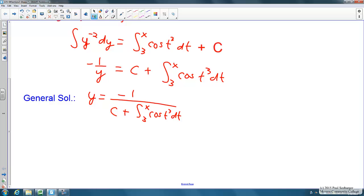What we need to do though is actually figure out what that c is based on our initial condition. We know that y of 3 is equal to 2, so we can plug the 2 in for y and we know that's equal to negative 1 over c plus the integral from 3 to 3 cosine of t cubed dt. The integral from 3 to 3 though is 0, so it ends up simplifying to 2 equals negative 1 over c. Multiplying the c up and dividing by the 2, we see this gives us that c is equal to negative 1 half.